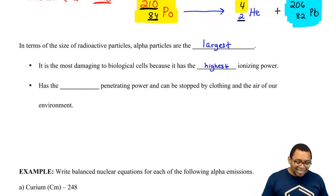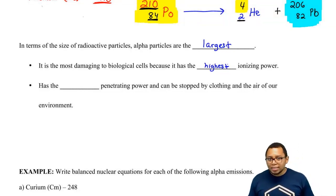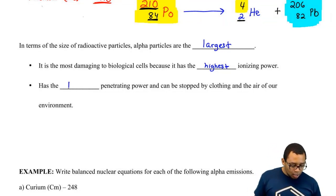The good thing is because it has the highest ionizing power and it's so large, it's extremely difficult for it to penetrate us, penetrate our skin and get into our cells. They have the lowest penetrating power.